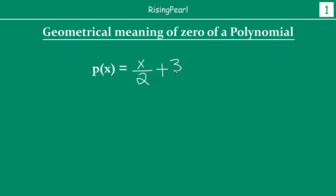So here we have a polynomial: I have taken x by 2 plus 3. I could have taken x plus 1 or 2x plus 3 — they are all linear polynomials. As long as the degree of the polynomial is 1, it's a linear polynomial. So here I have taken x by 2 plus 3, and like we saw last time, we assume the value of the polynomial at a value of the variable is represented by y. So y equals p(x), which equals x by 2 plus 3.